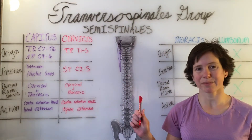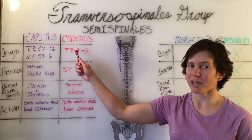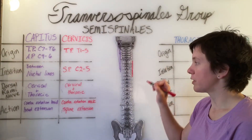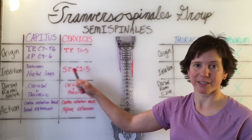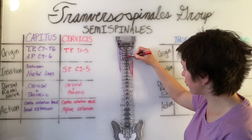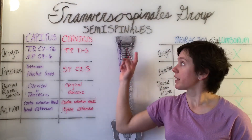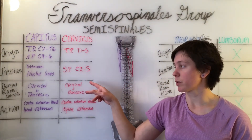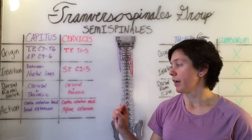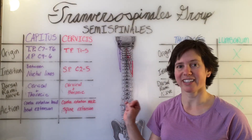The semispinalis cervicis will originate on the transverse process of T1 through T5 and will insert on the spinous process of C2 through T5. It has the same innervation as the semispinalis capitis, with dorsal rami from the cervical and thoracic nerves, and has the same action of contralateral rotation of the neck and spine extension.